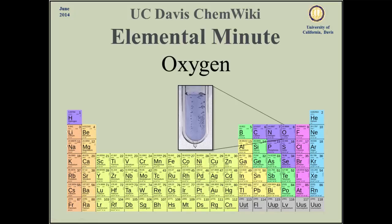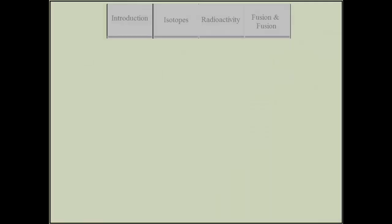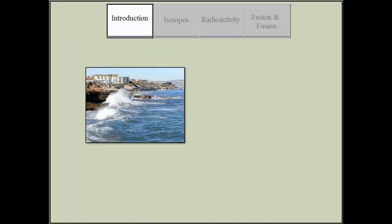Oxygen is a highly reactive non-metal and oxidizing agent in the chalcogen group that is the third most abundant element in the universe, found in the Earth's crust, oceans, and air.